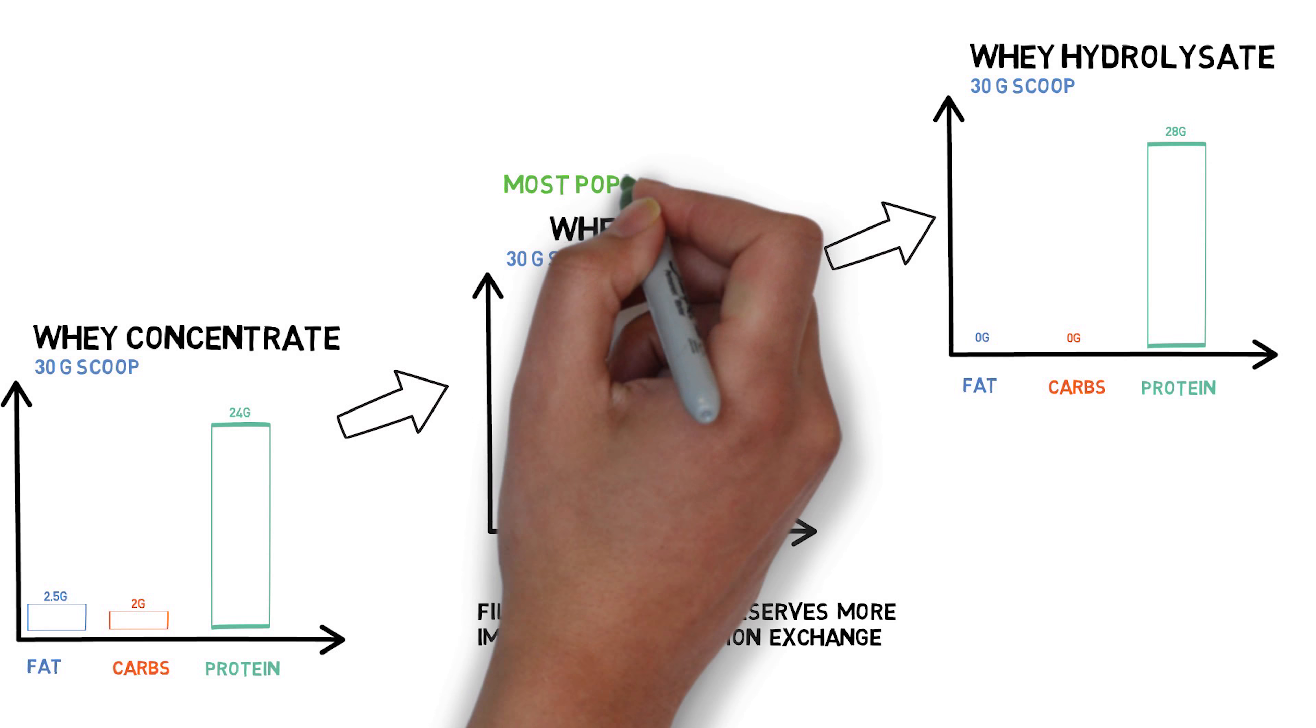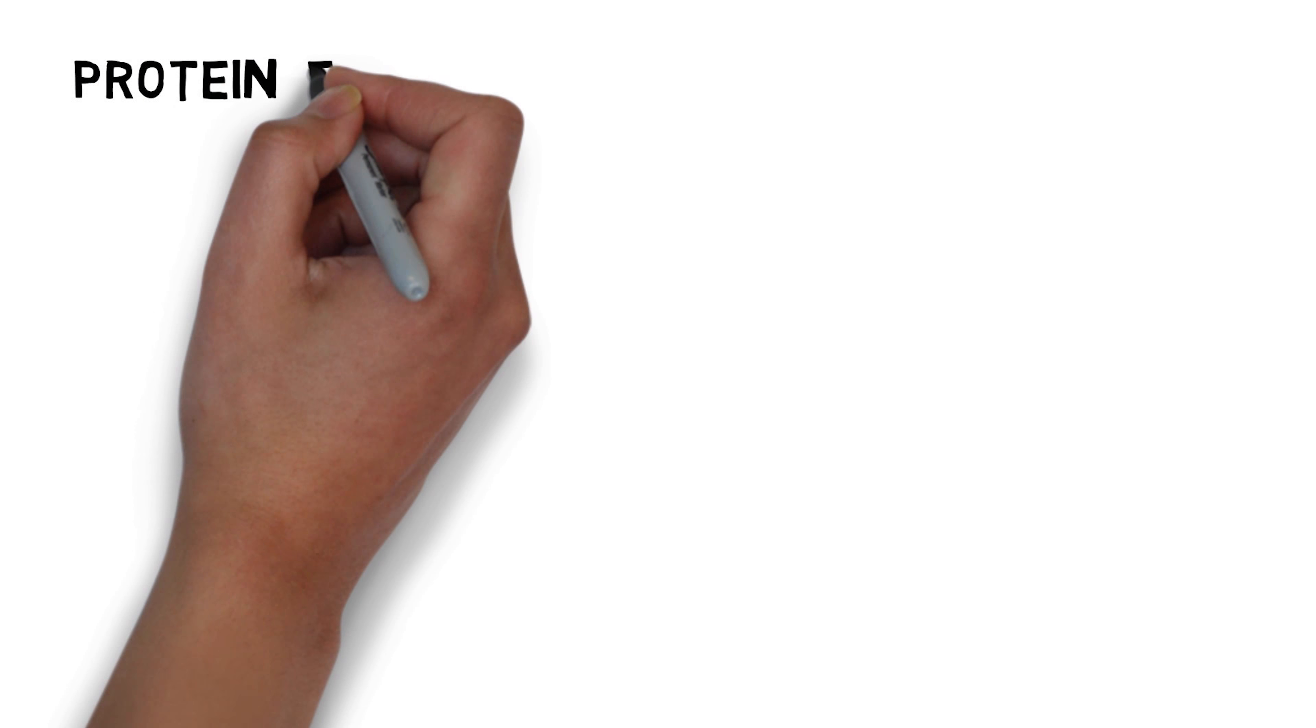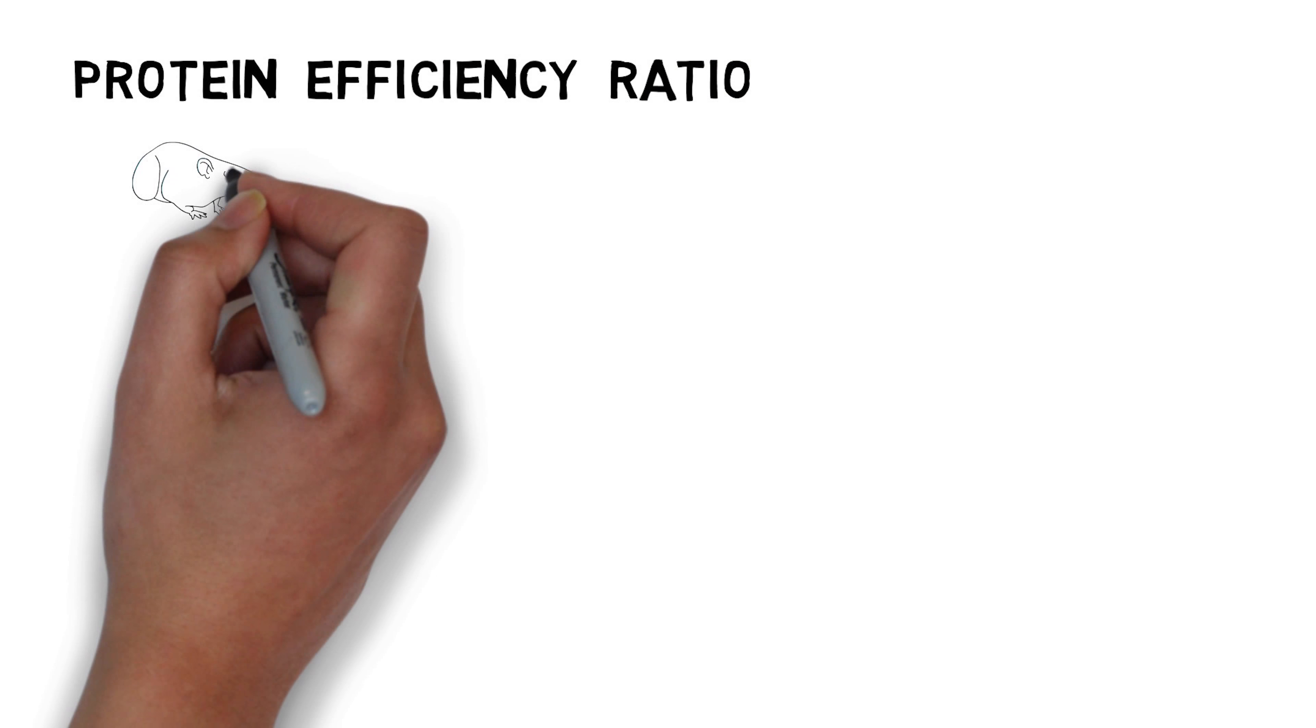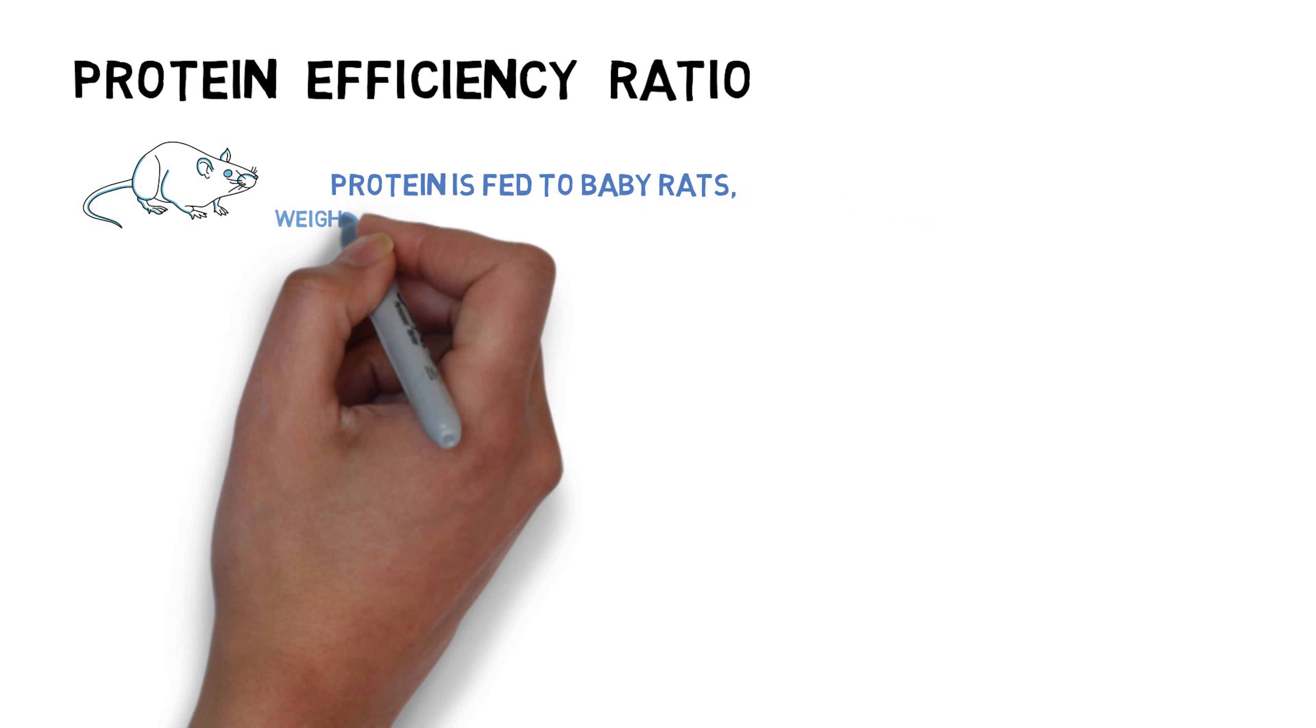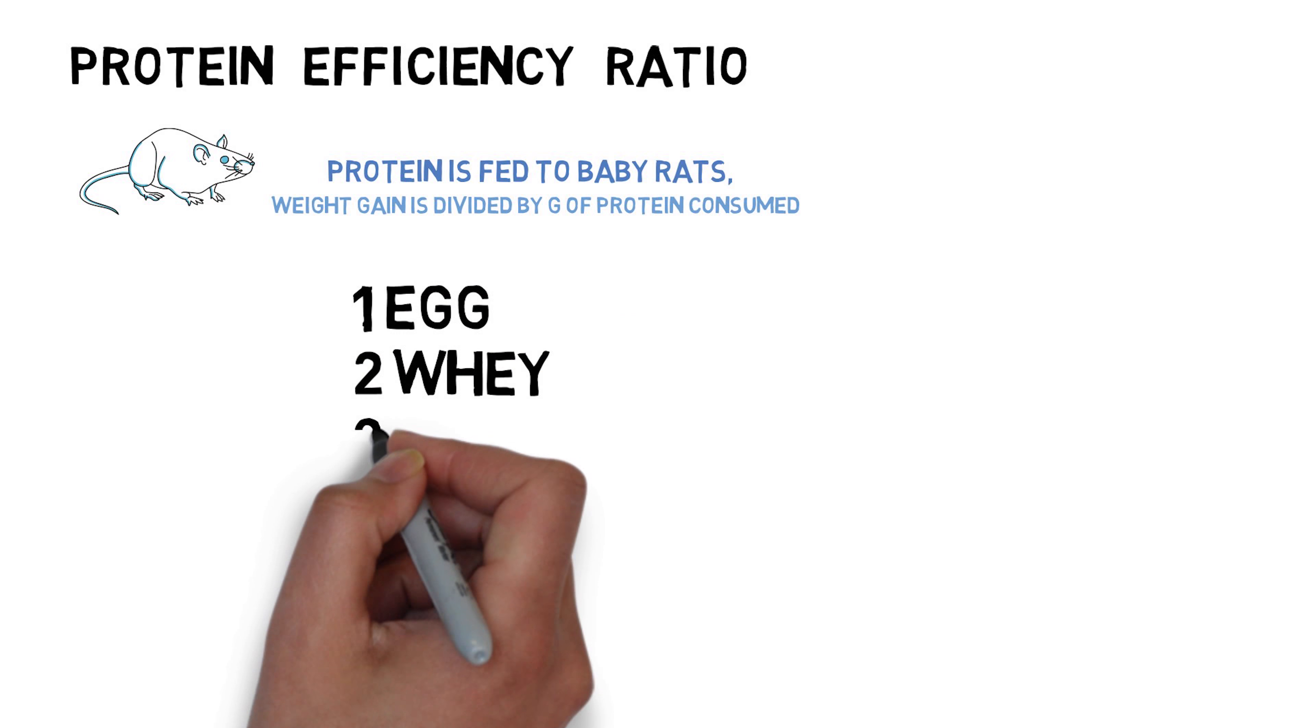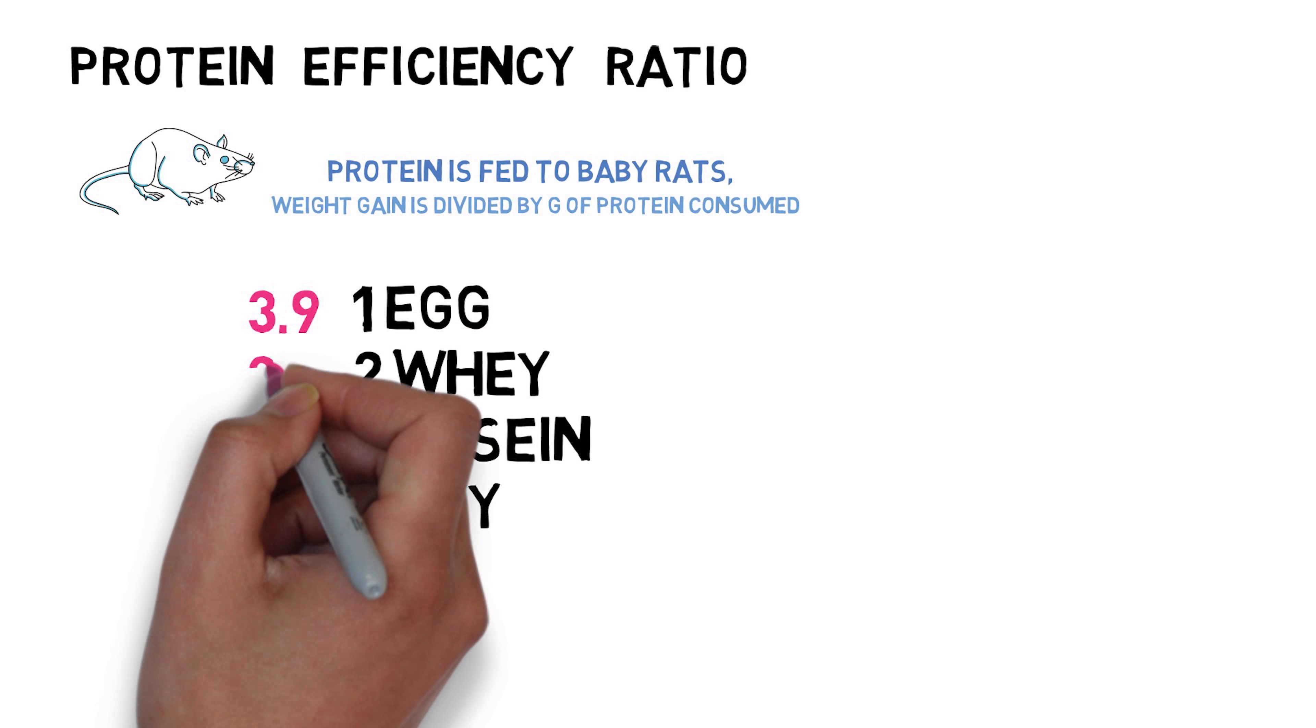I'm going to focus on whey isolates, which are the most common type of whey protein. So how do they stack up versus other protein sources? For a long time, the go-to measure was the protein efficiency ratio. This 100-year-old method depended on feeding protein to baby rats and then measuring their weight gain from a single gram of protein. Anything above 2.7, the score of casein, was considered good. Whey scored 3.2.